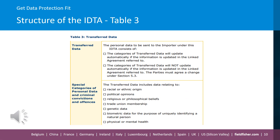Table 3 describes types of transferred data, including special categories of data, data subjects, and purposes of processing. Importantly, it can be completed by reference to the linked agreement, which will normally include all the details. Table 3 helpfully sets out that the parties can choose whether the IDTA will be automatically updated if the information in the linked agreement is updated, which is a pragmatic solution, or whether the parties will have to agree a change separately.